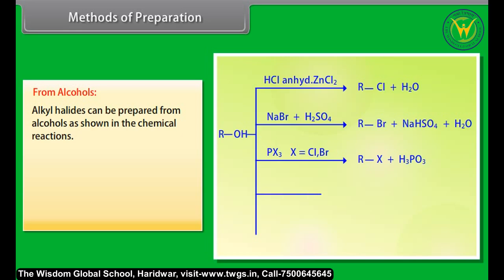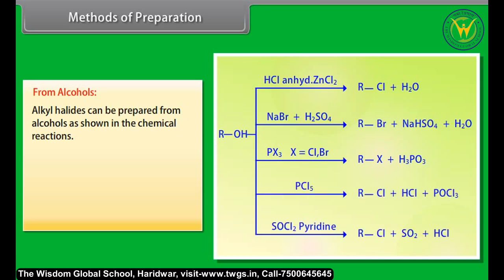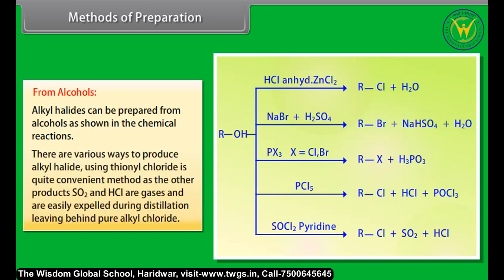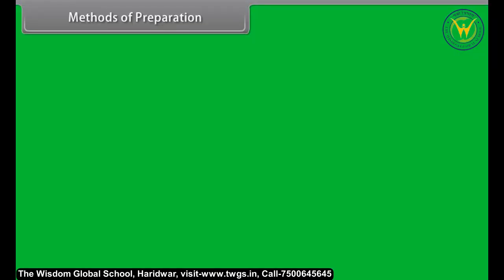Alkyl halides can be prepared from alcohols as shown in the chemical reactions. Using thionyl chloride is a particularly convenient method, as the other products SO2 and HCl are gases and are easily expelled during distillation, leaving behind pure alkyl chloride.